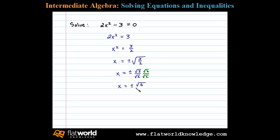That'll leave us with x equals plus or minus the square root of 6 over the square root of 4, or equivalently x equals plus or minus the square root of 6 over 2.